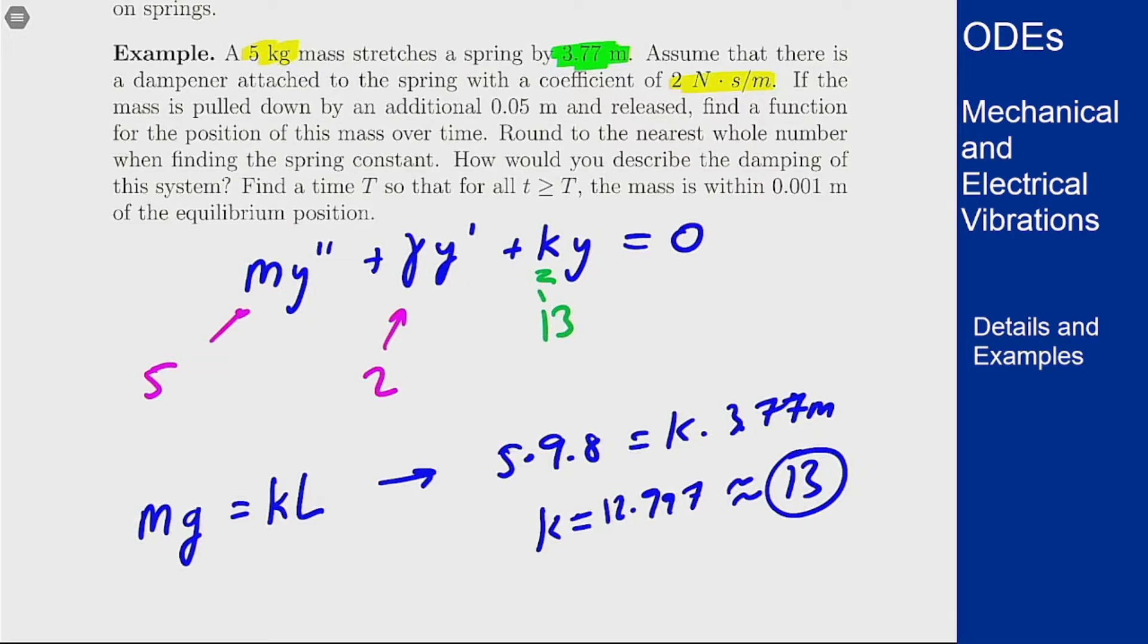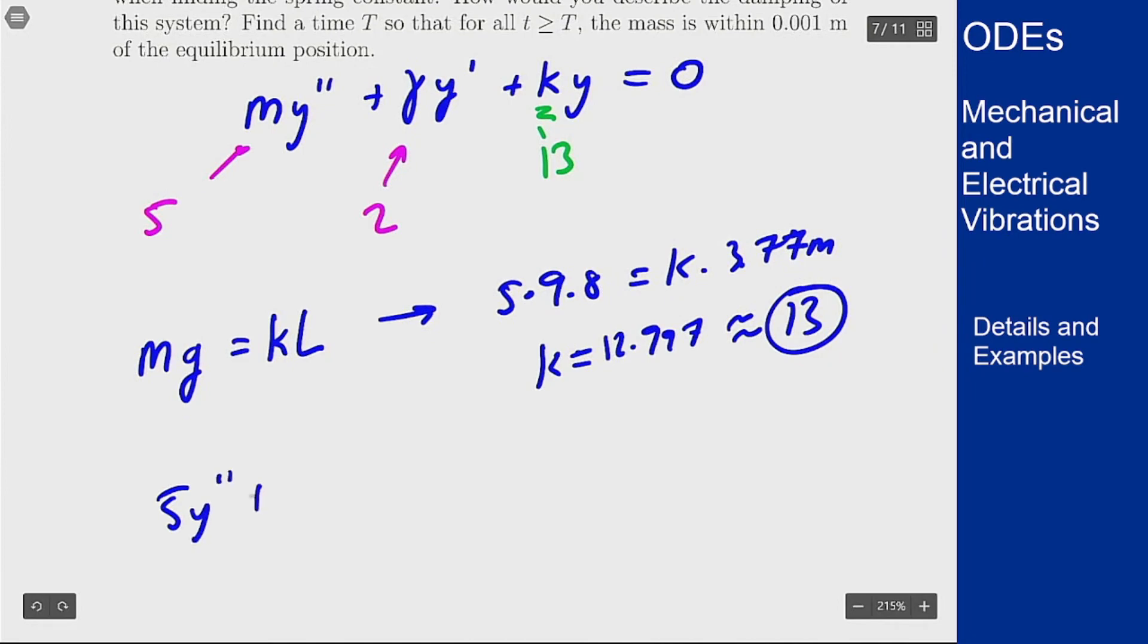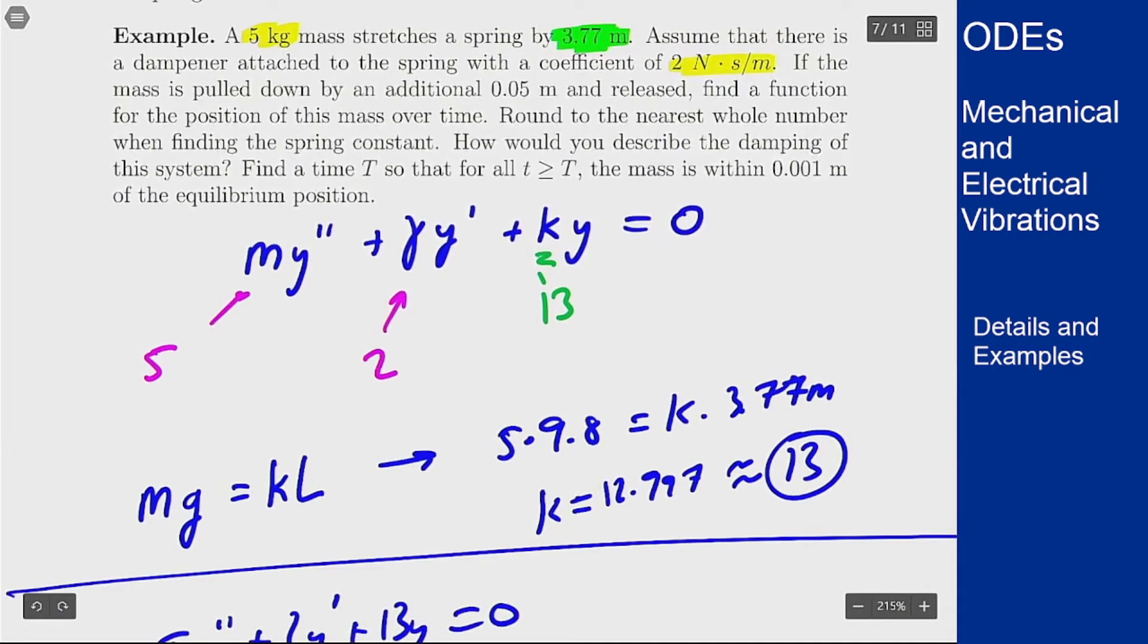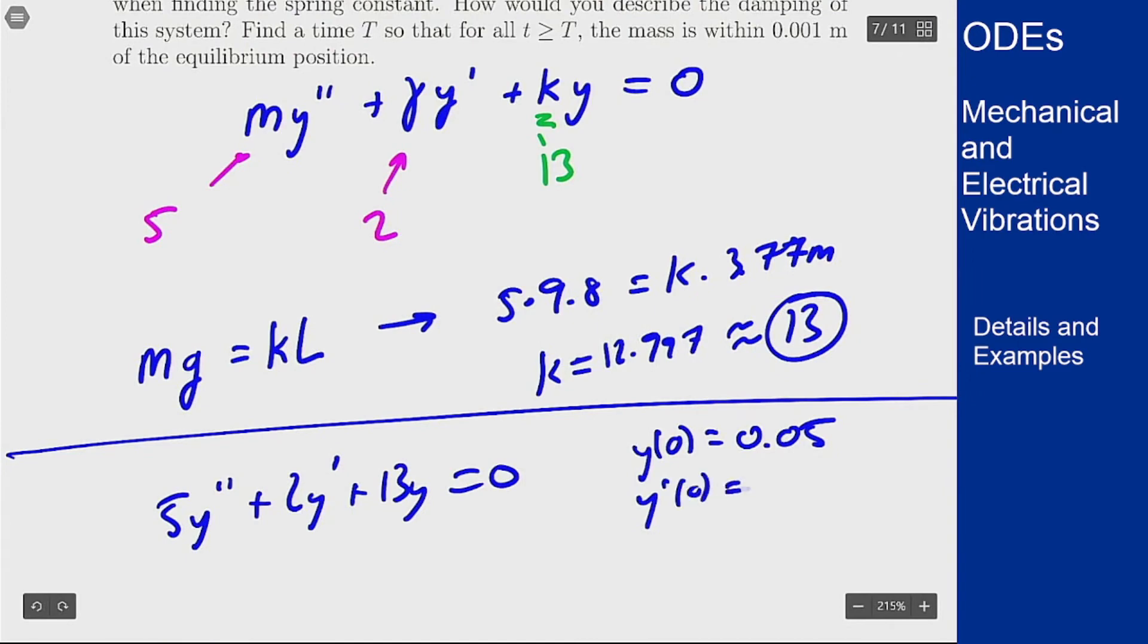So this means I'm left with the differential equation 5y double prime plus 2y prime plus 13y equals 0. But what about initial conditions? Well in the problem statement I'm told that this mass will be pulled down by an additional 0.05 meters and then released. So the 0.05 meters is the additional displacement where it's pulled down before it's released. That tells me that y of 0 equals 0.05 and released means the additional velocity is 0 because I have not put any extra velocity in it when I've let it go.